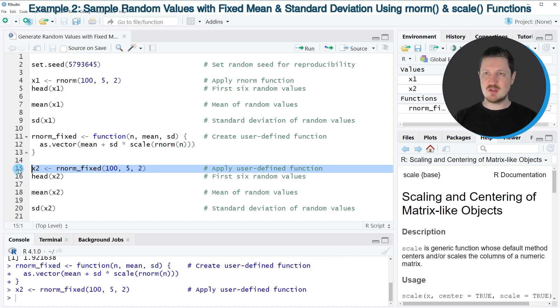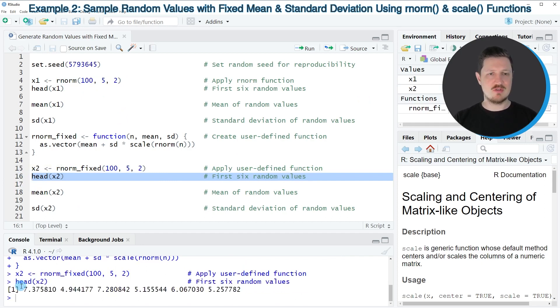So after running line 15 of the code, you can see that another data object called x2 is appearing at the top right. And this data object also contains randomly distributed values as you can see by running line 16 of the code.